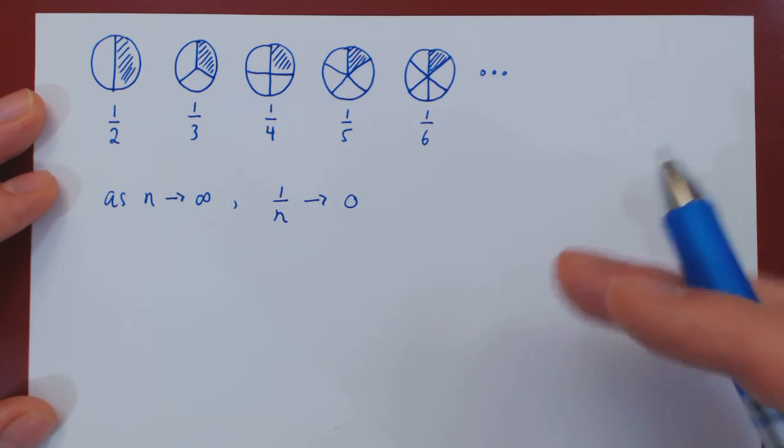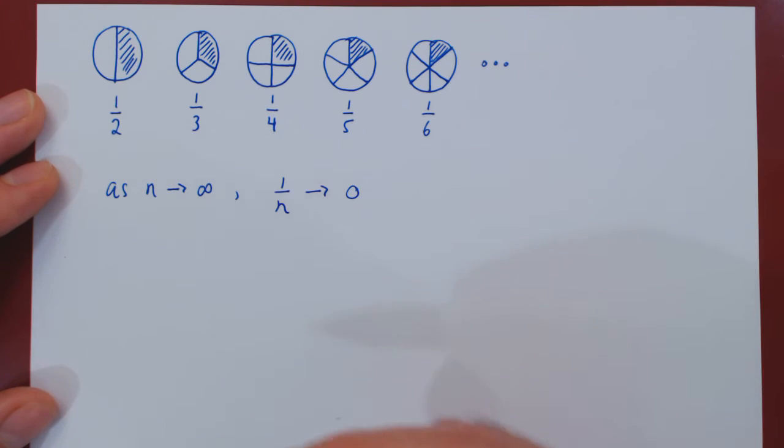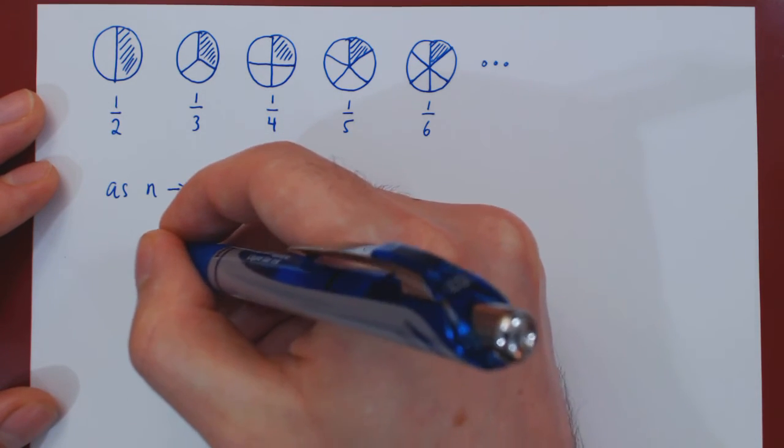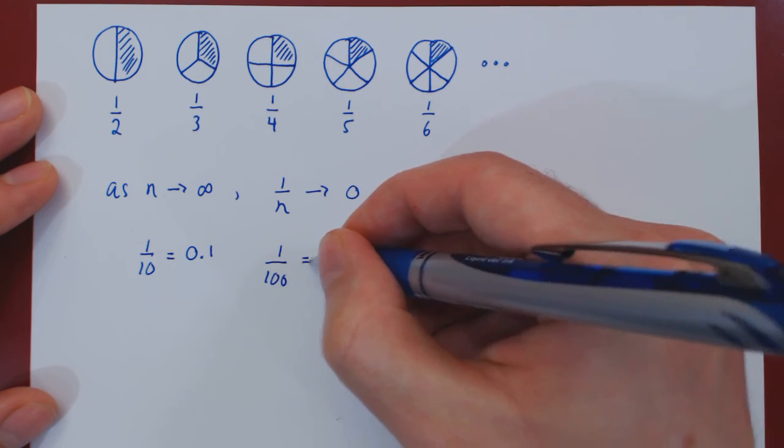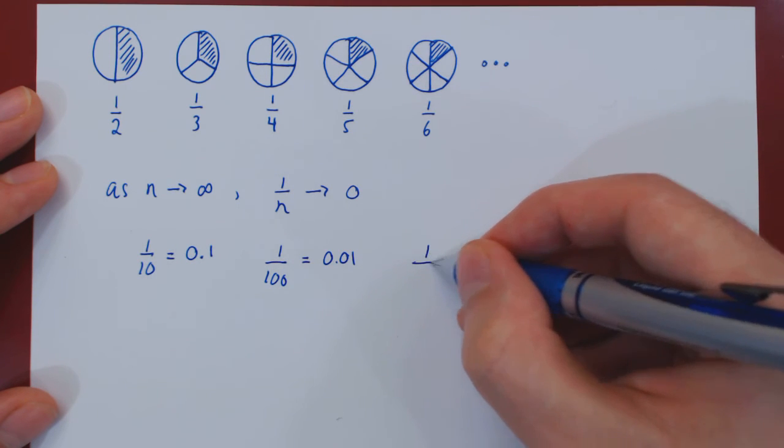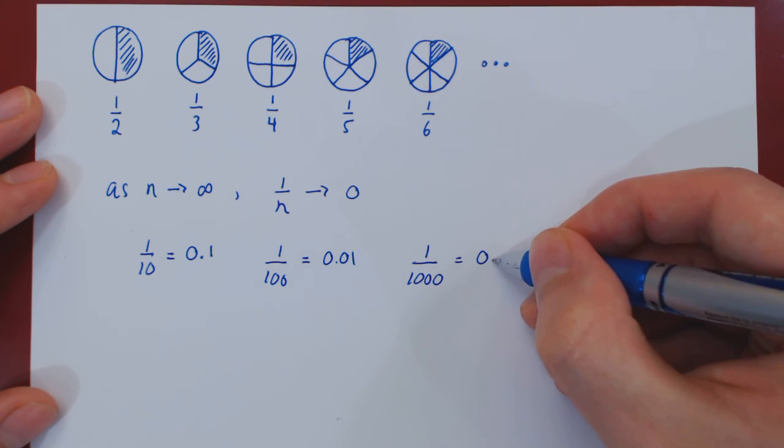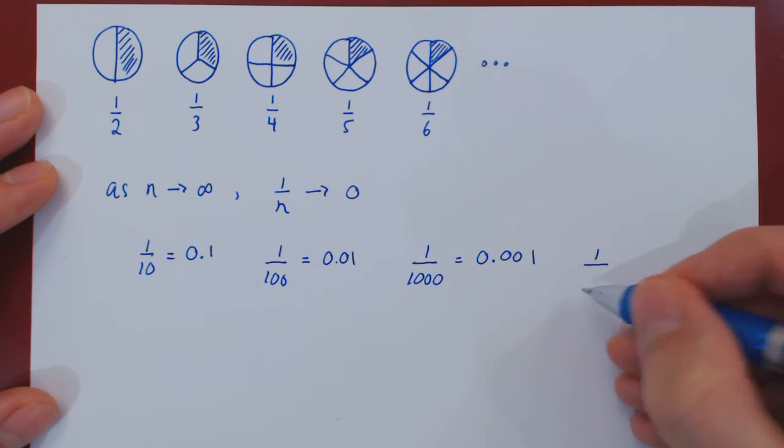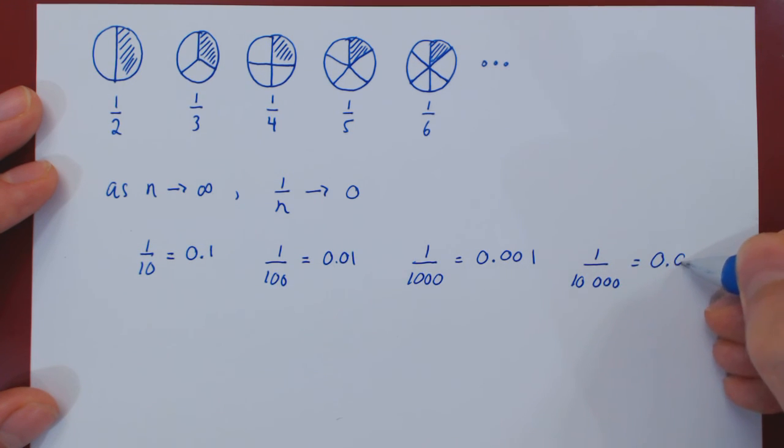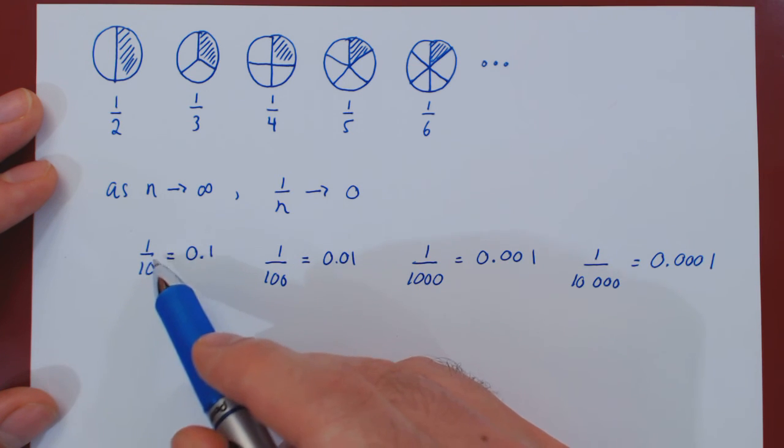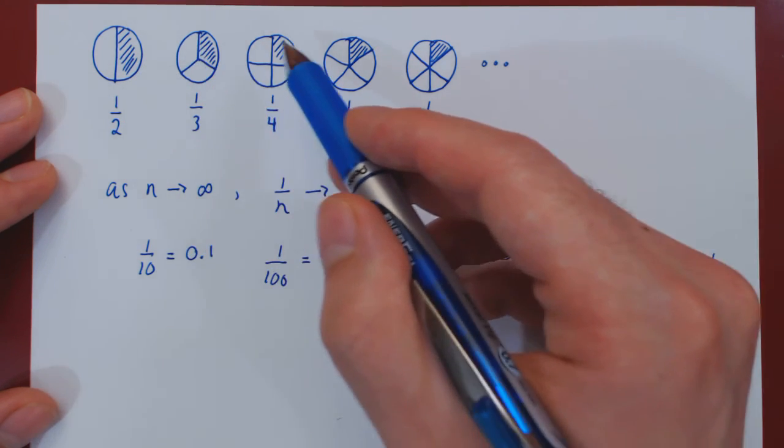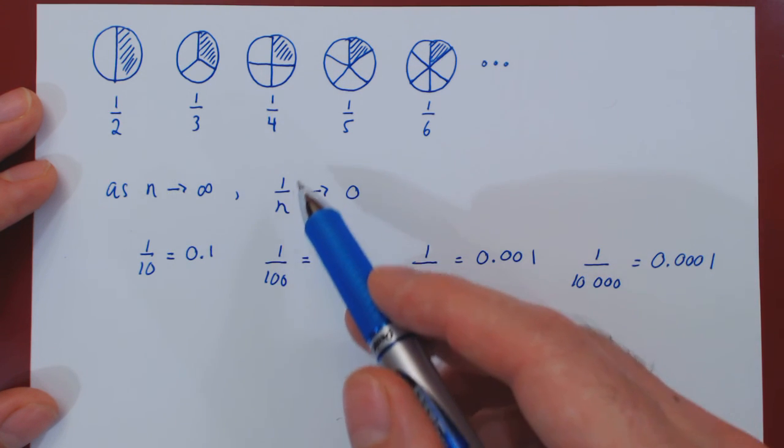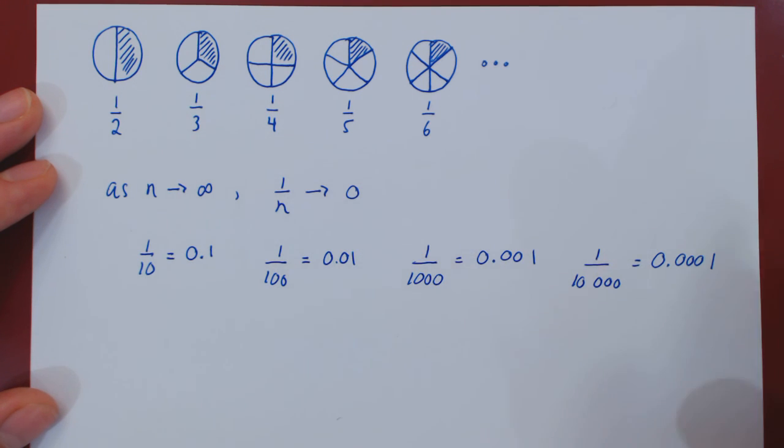You can also look at this from a numerical perspective. What if you look at multiples of ten? If n is 10, then 1 over 10 is 0.1. If you take 1 over 100, this is 0.01. 1 over 1,000 is 0.001. 1 over 10,000 is 0.0001, and so on. As you divide 1 into a larger and larger number of parts, the parts are getting smaller and smaller. You can see it geometrically as well. As n gets bigger and bigger, 1 over n gets smaller and smaller, therefore shrinking to zero.